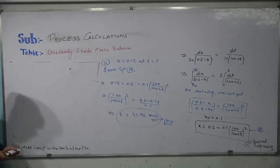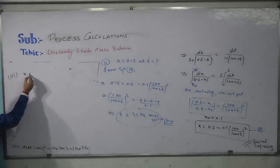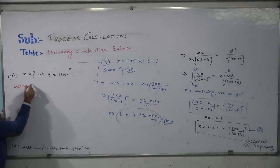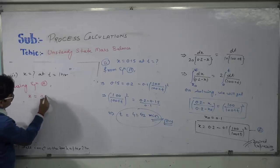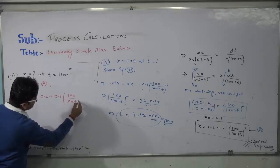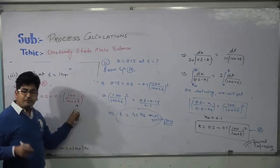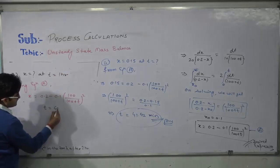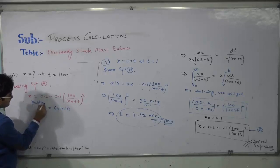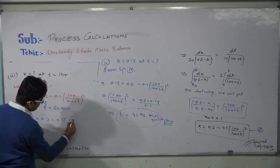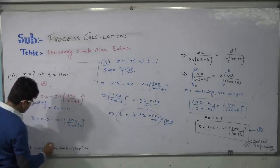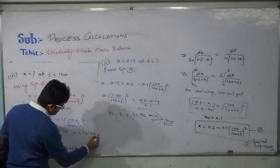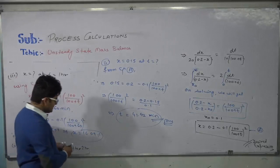Part three asks for the salt concentration at t = 1 hour. Since the flow rate was in kg per minute, convert t = 1 hr to 60 minutes. Using equation (a): x = 0.2 − 0.1·[100 / (100 + 60)]² = 0.1609, which corresponds to 16.09%.